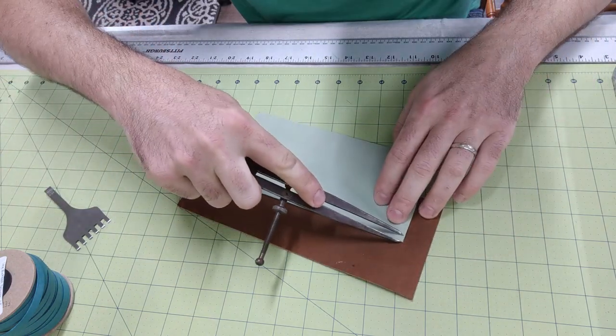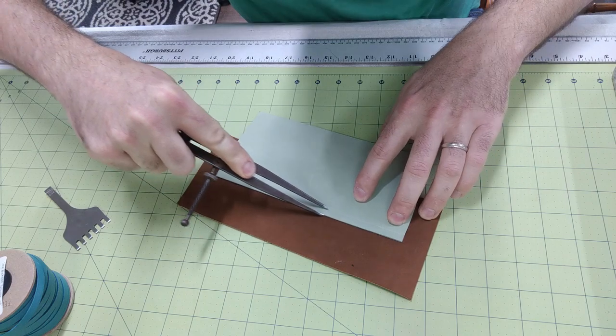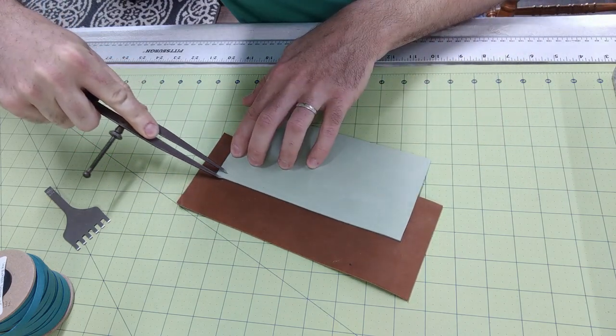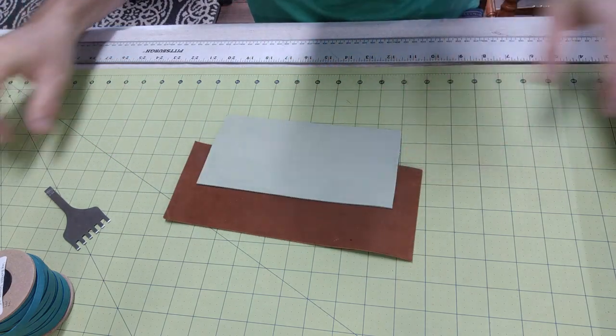The first thing I'm going to do is take a pair of wing dividers that are set a quarter of an inch apart and mark down on the top piece of the leather.